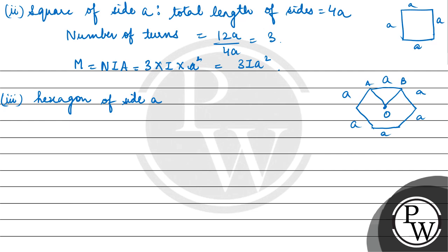Here our total length will be, total length of sides, will be 6A. So number of turns will be